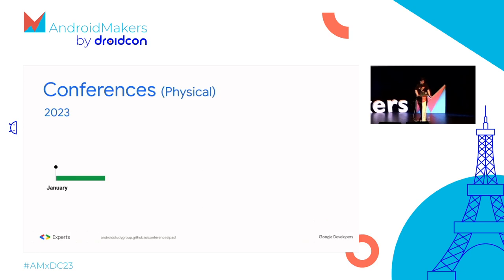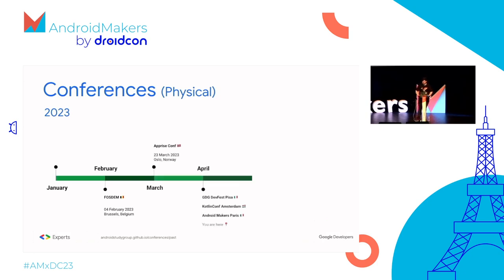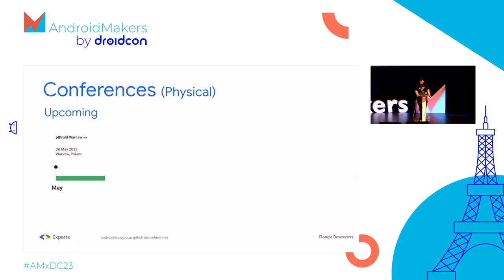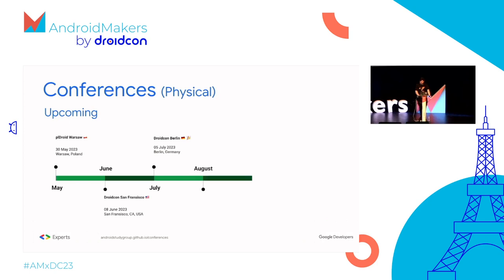These are only physical conferences. Moving into 2023: Fosdem in February, AppRiseConf in March, and Pisa, Amsterdam, and Paris in April. Warsaw next month, then San Francisco. Some upcoming conferences from the Android Study Group online website — Warsaw, San Francisco, Berlin, then Lisbon, Turin, and London.